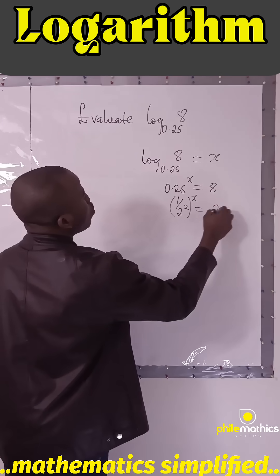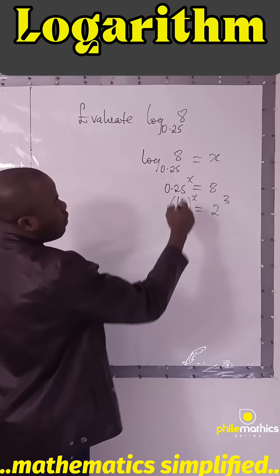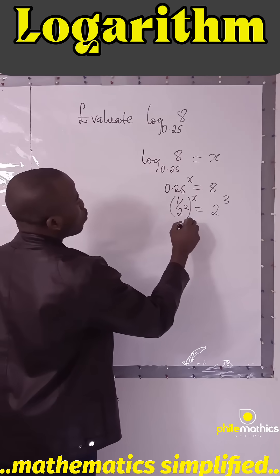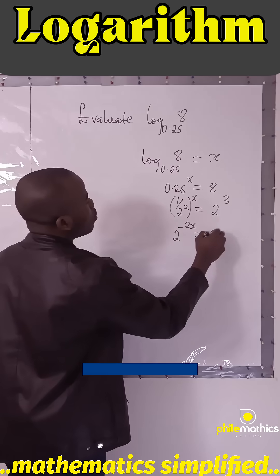And if I take this up, the inverse of this would be 2 to power minus 2. Using exponent rules, 2 to power -2x equals 2 to power 3.